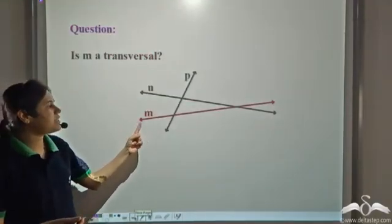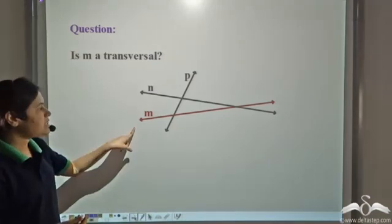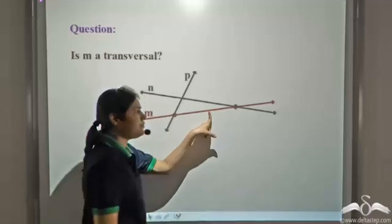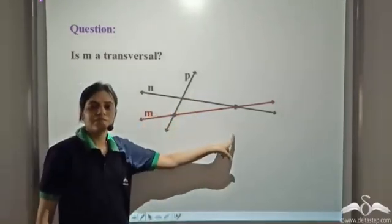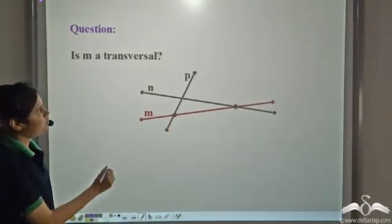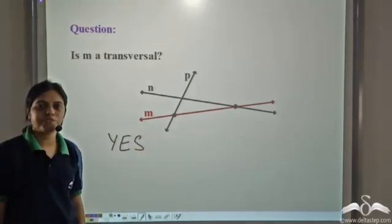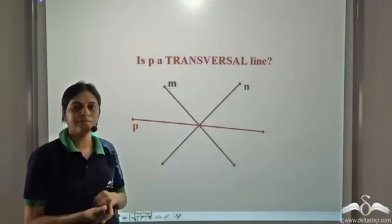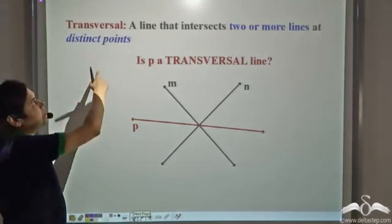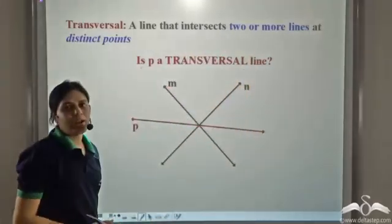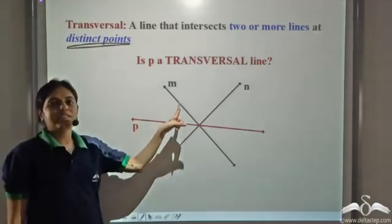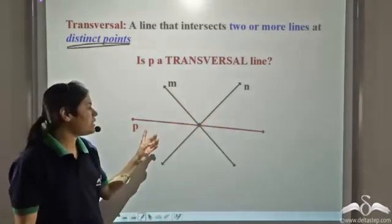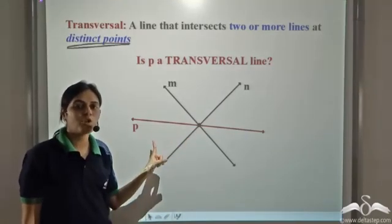Can you tell whether M is a transversal? We see that M intersects line P and M also intersects line N, so M is a line which intersects two lines — hence M is a transversal. Is P a transversal? P intersects M and N, but recall the definition: a transversal is a line that intersects two or more lines at distinct points. P intersects M and N at the same point, so this point is common to P, M, and N. P does not intersect M and N at distinct points, so P is not a transversal.